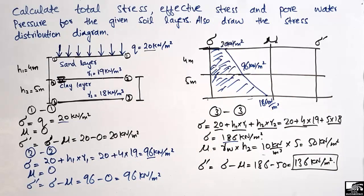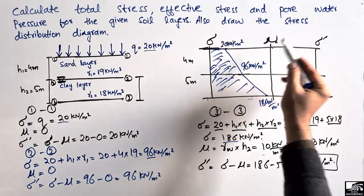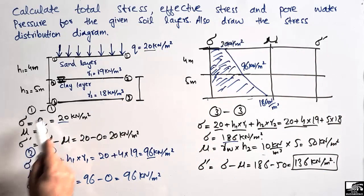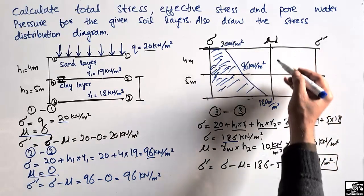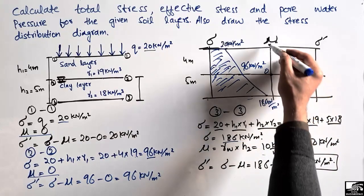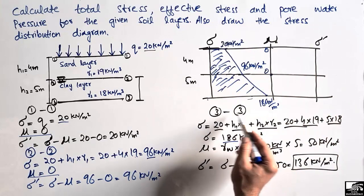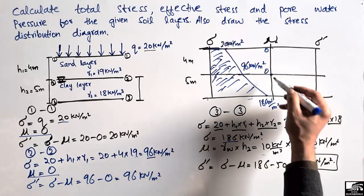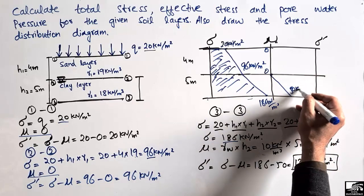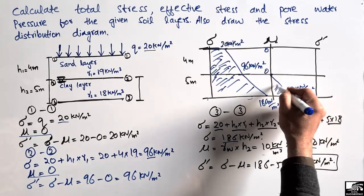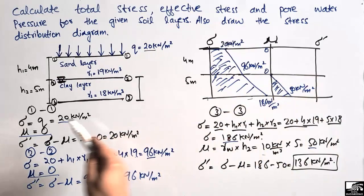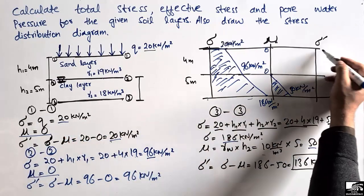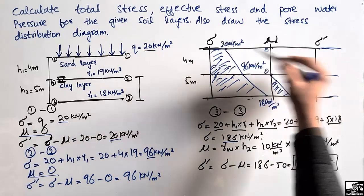For the pore water pressure diagram: at section 1-1 it is 0, at section 2-2 it is also 0, and at section 3-3 it is 50 kN per square meter. For the effective stress diagram: at section 1-1 it is 20 kN per square meter, equal to the total stress since pore water pressure is zero there.